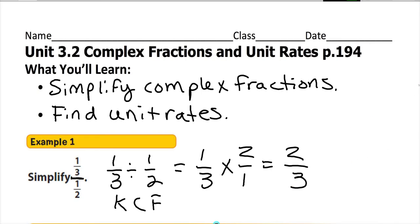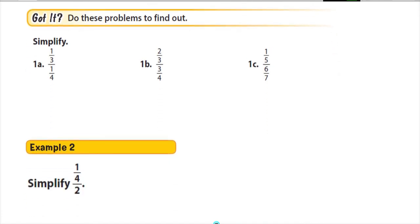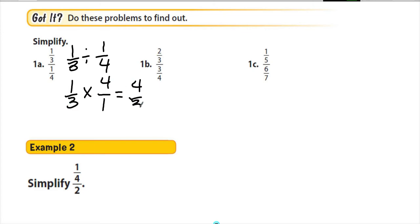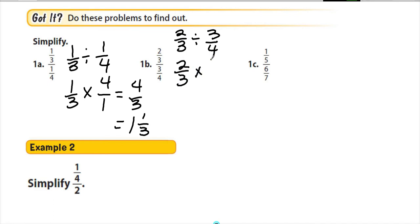Pause and try the next one on your own. This is 1 third divided by 1 fourth. Writing it out: 1 third divided by 1 fourth. Keep, change, flip gives us 1 third times 4 over 1, which equals 4 thirds, and we know that makes 1 and 1 third.